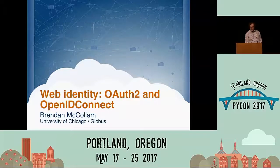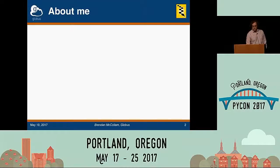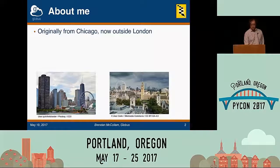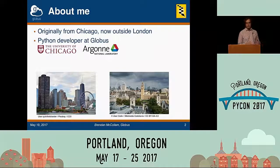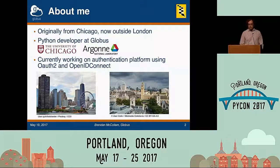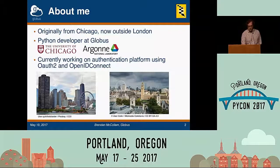Hi, thanks for coming to my talk, everyone. Just to start off with a little bit about myself: I'm originally from Chicago, but I moved to London about a year ago, so living there now. I work at Globus. We're a nonprofit — a joint project between the University of Chicago and Argonne National Lab. We're a data platform that helps manage large-scale scientific data, and I work on the authentication back end for that, using OAuth2 and OpenID Connect, two protocols that we're going to be talking about today.